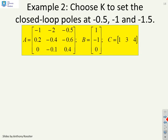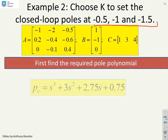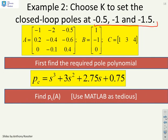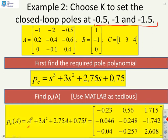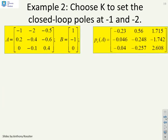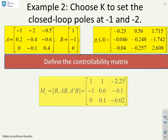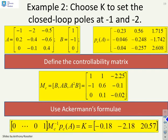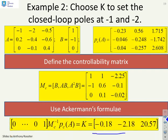Here's a different example — a 3-by-3 system, which is a little more complicated with 3 poles to place. First, find the required pole polynomial; it has coefficients 3, 2.75, and 0.75. Then work out PC of A, which means computing A cubed plus 3A squared plus 2.75A plus 0.75I. I've used MATLAB here because this really is getting tedious by hand. Next, find the controllability matrix given by [B, AB, A squared B] — again somewhat tedious by hand. Finally, plug the numbers into Ackermann's formula and out comes the corresponding k.